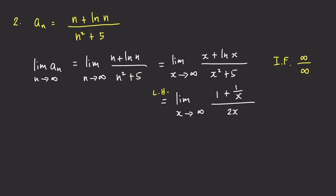As x goes to infinity, the denominator 2x goes to infinity, and 1 over x goes to 0. So the expression is in the form 1 over infinity — a very small number — and the values approach 0. Therefore, the limit equals 0. Since the limit exists, the sequence a sub n is convergent.